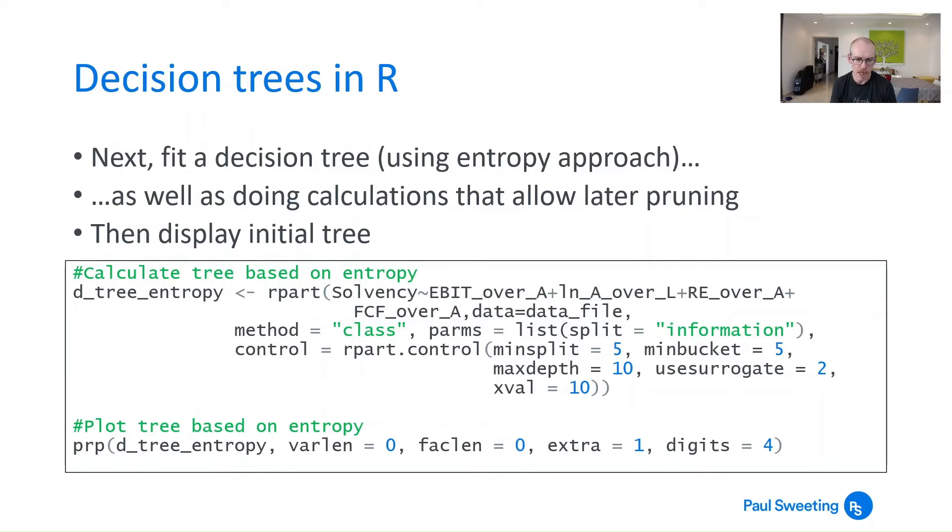So the function that we use is rpart and you'll see the first part of it is essentially the same as any kind of regression. You've got your regressor which is solvency. You've then got the things that you are using to determine this which is a line of those four items with plus in the middle. Where are we getting this from? Well data equals data file so that's the data that we input originally.